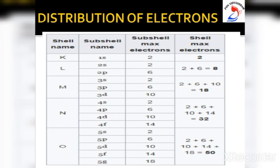For the first energy level, n = 1. Using the formula 2n²: 2 × 1² = 2. So the maximum number of electrons in the first energy level is 2. For the second energy level, n = 2: 2 × 2² = 2 × 4 = 8. So 8 electrons can be accommodated in the second energy level. For the third energy level, n = 3: 2 × 3² = 2 × 9 = 18.